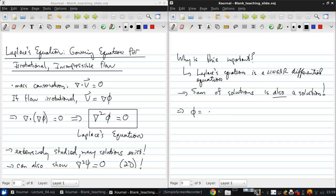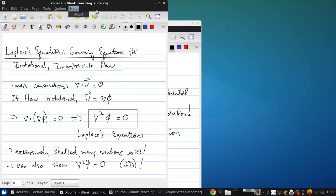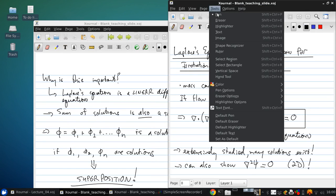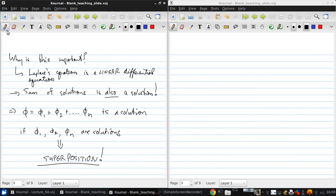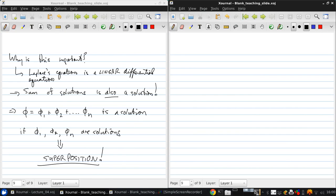So what does that imply? So that means that if we have some potential that is the sum of any number of other potentials, this is a solution of the equation if each of phi 1, phi 2, phi n are solutions. So we can develop complex solutions using superposition.